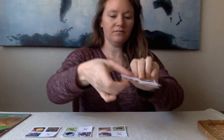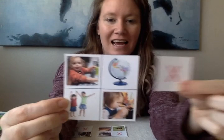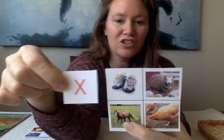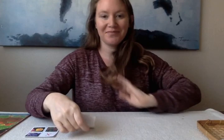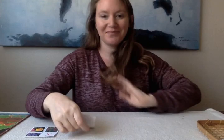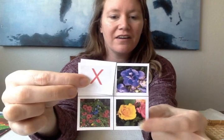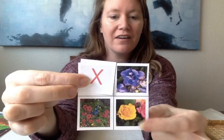Now I'm going to show you one more time. We have child, child, child, and the globe does not belong — we put the X. We have animal, animal, animal, and the shoes do not belong — we put an X. We have bird, bird, bird, and the dishes do not belong — we put an X. We have flower, flower, flower, and the nest does not belong — we put an X.